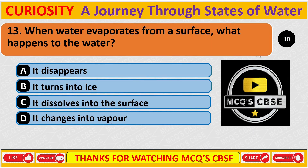When water vapour evaporates from a surface, what happens to the water? The correct answer is D: It changes into vapour.